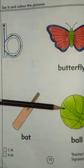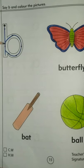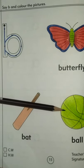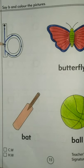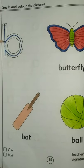B is for ball. B is for ball. Very nice. Again repeat after me. B is for ball. Very good.